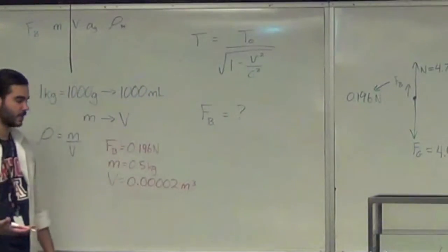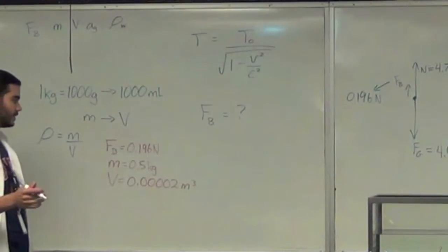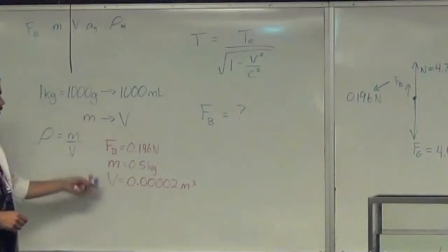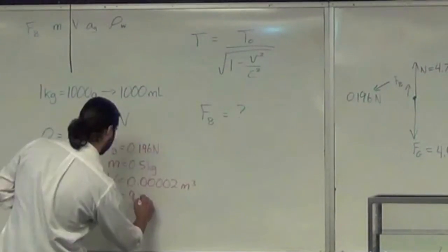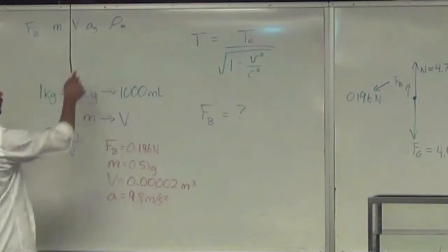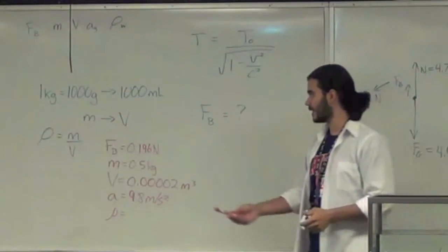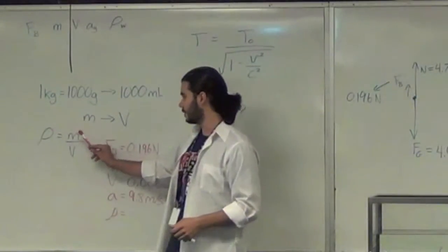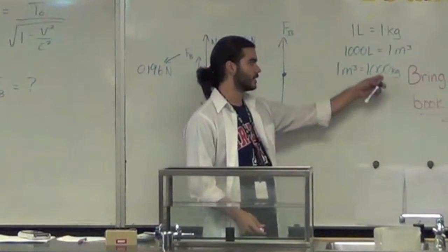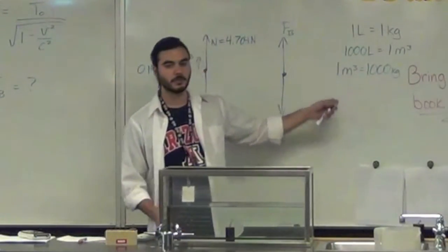Or if you wanted to put that in scientific notation, it would be 2.0 times 10 to the negative 5. So we've got our buoyancy force, we've got our mass, we've got our volume. What's our acceleration due to gravity? 9.8 meters per second squared. And what is our density of water? Again, density is given in mass per volume. In standard units, the density of water is 1,000 kilograms per meter cubed.